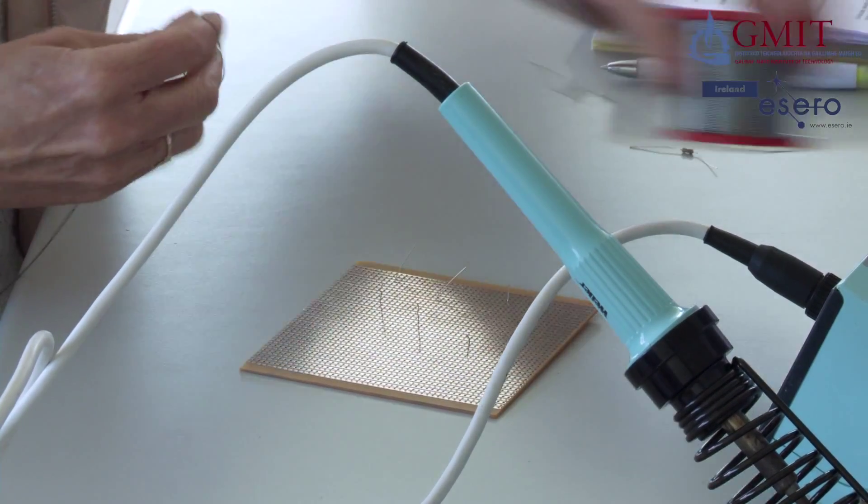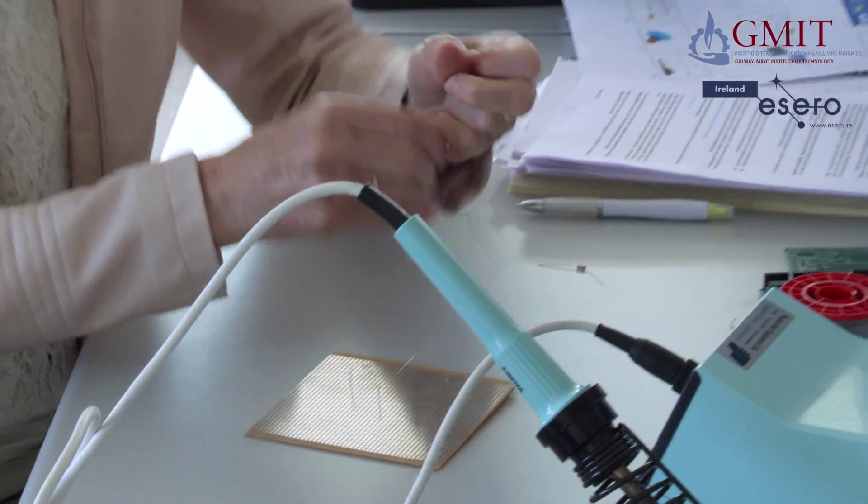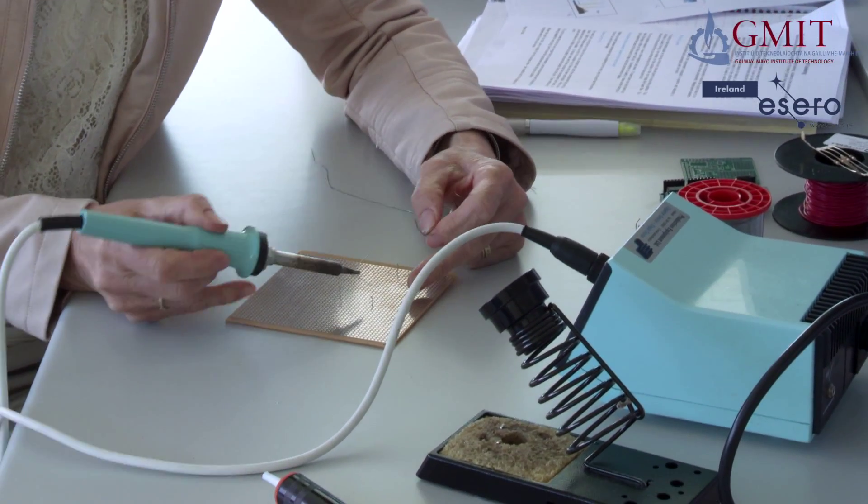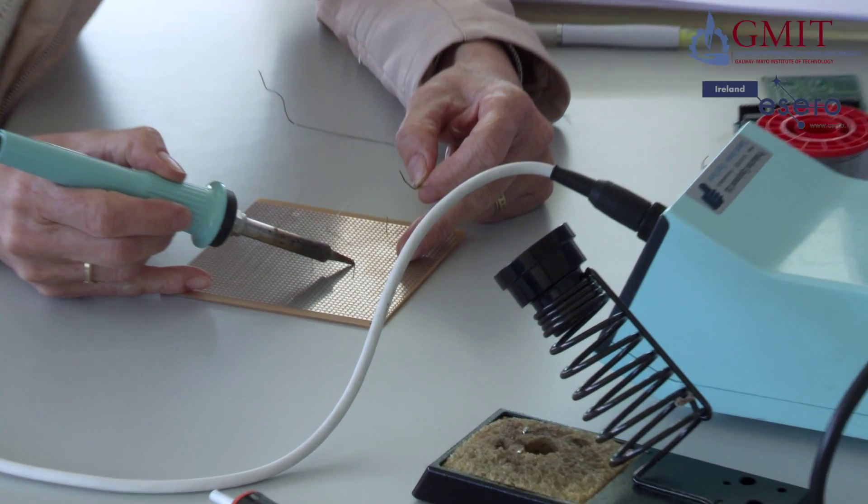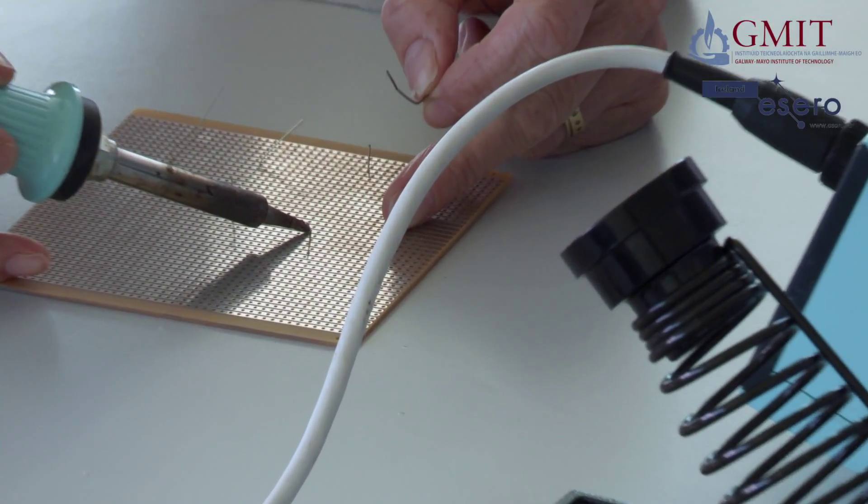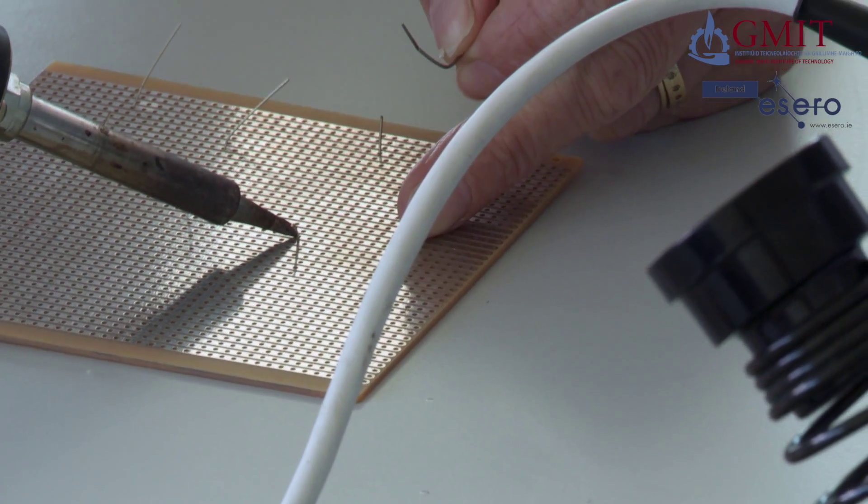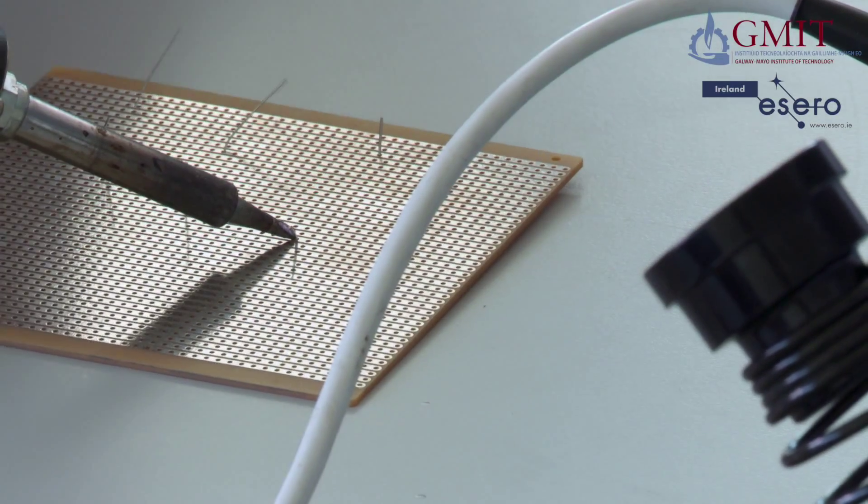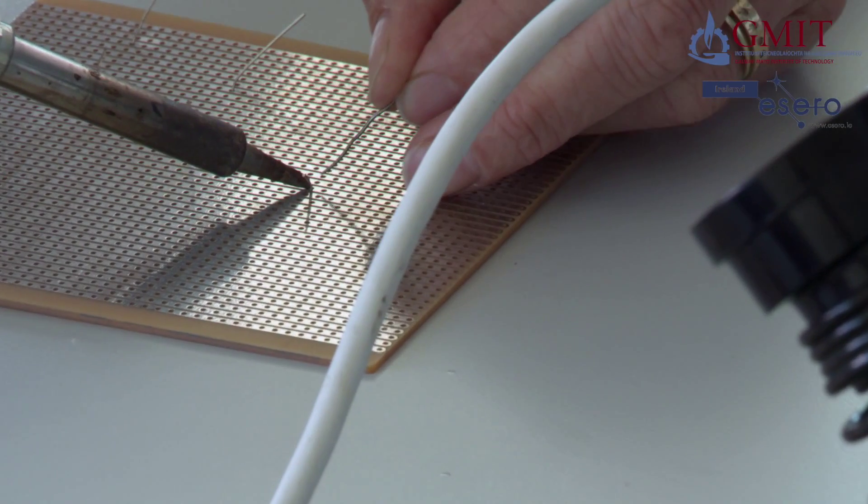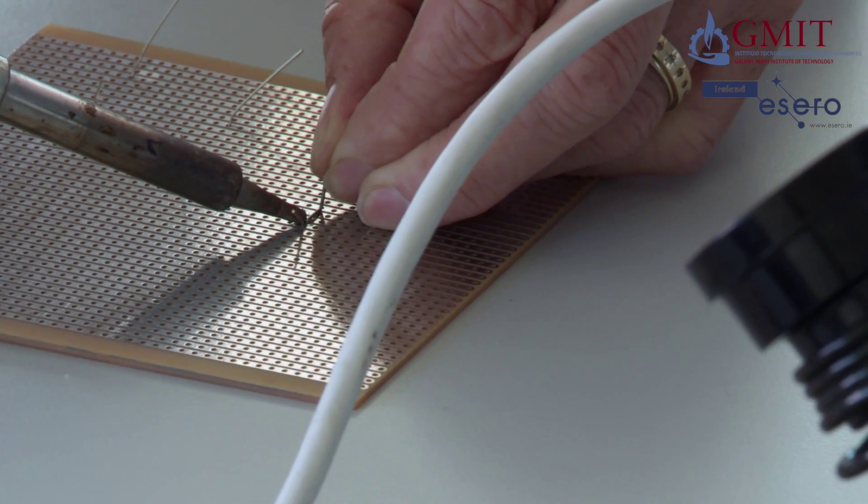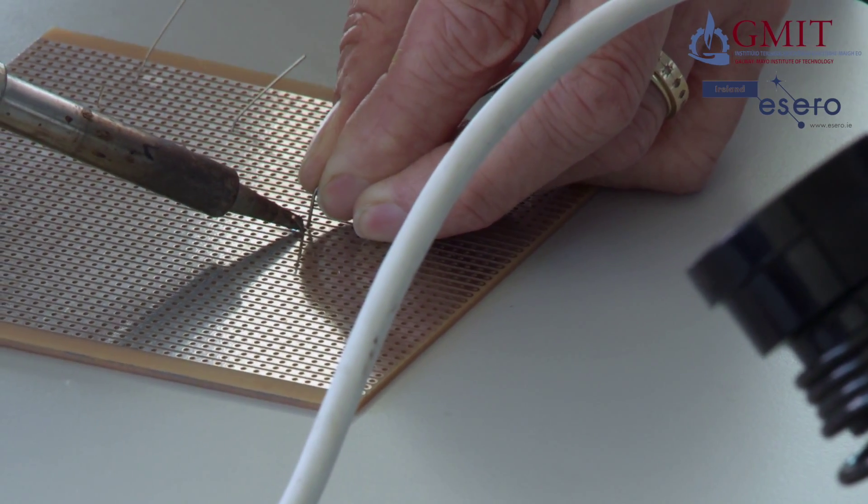Now, what's important is that both the component leg and the track are hot before you bring in the solder, because the solder will only stick to hot surfaces. So I'm going to heat up both. I have the iron there in contact with both the component leg and the track. Then I bring in the solder. And as it gets hot, it should flow over the joint.